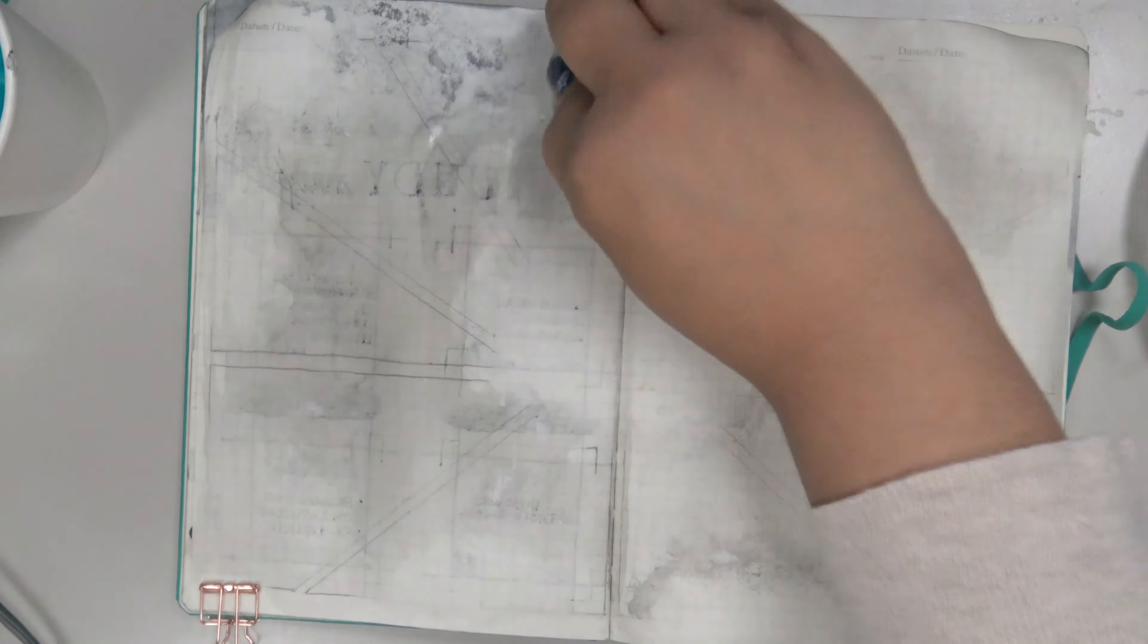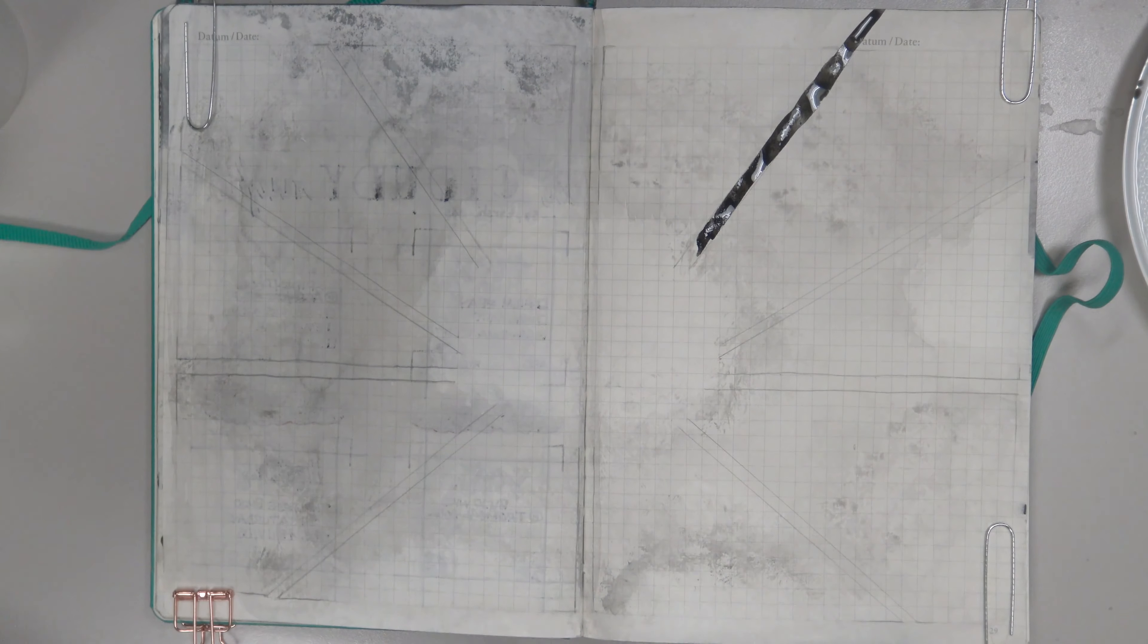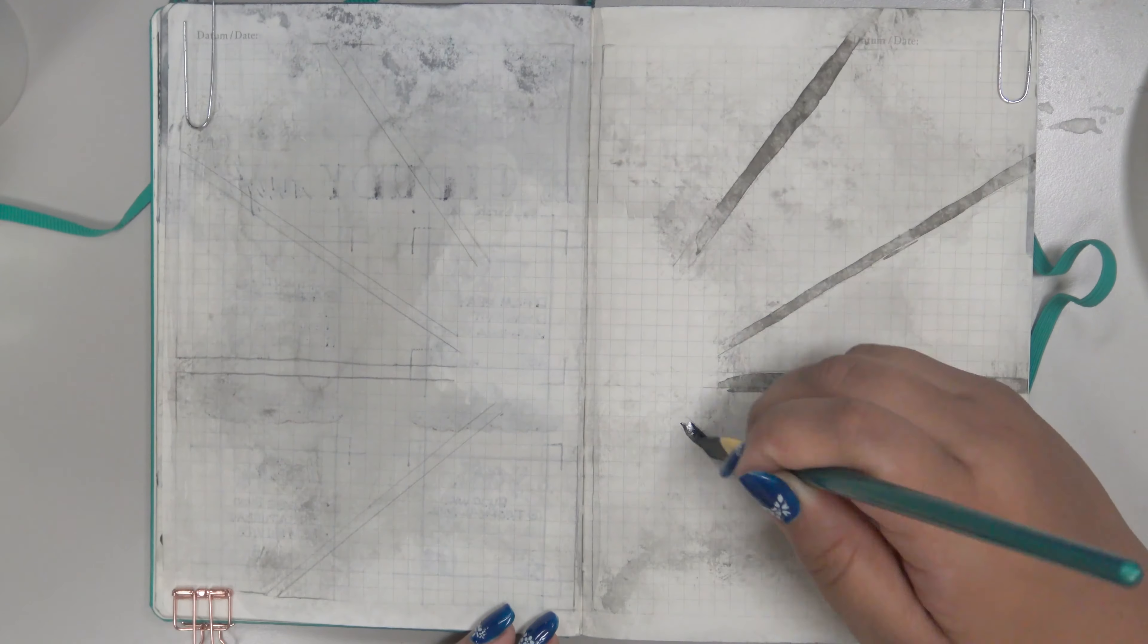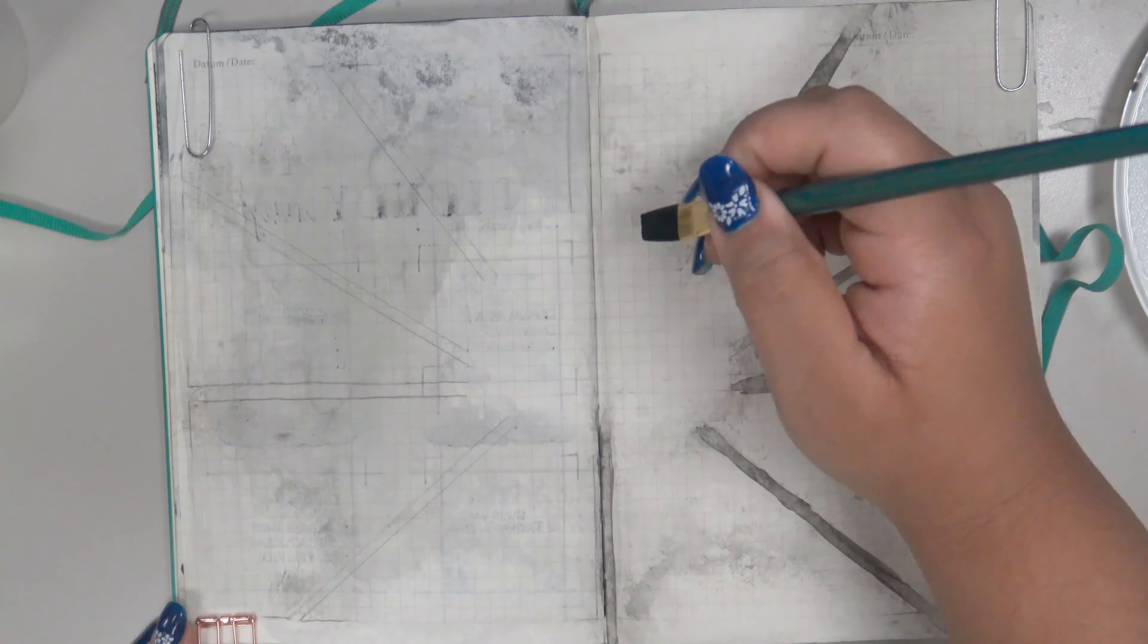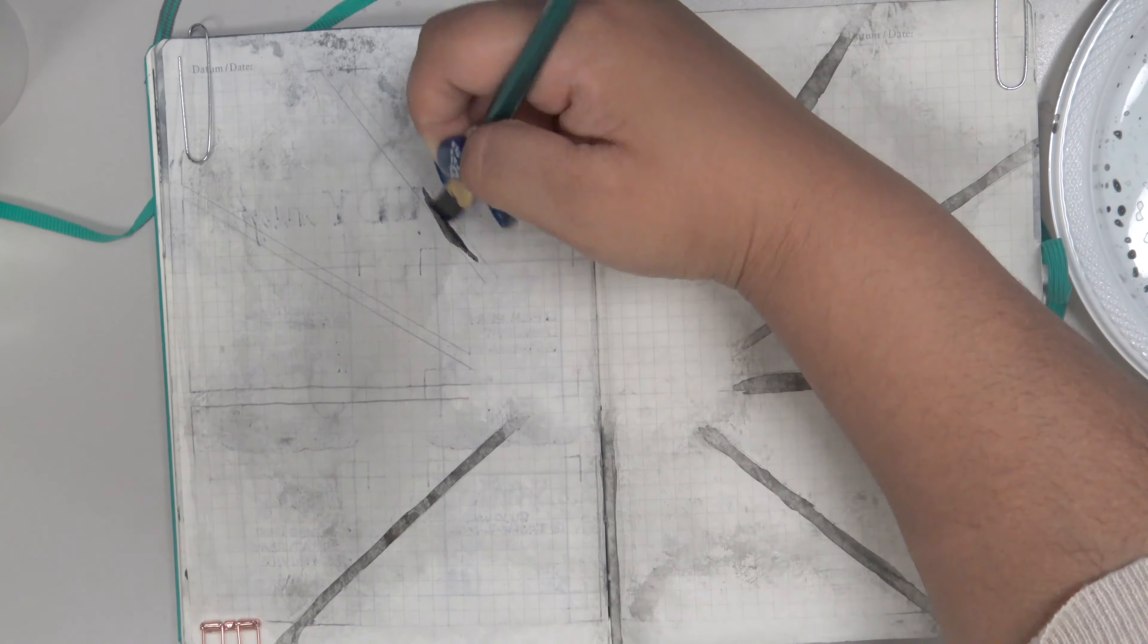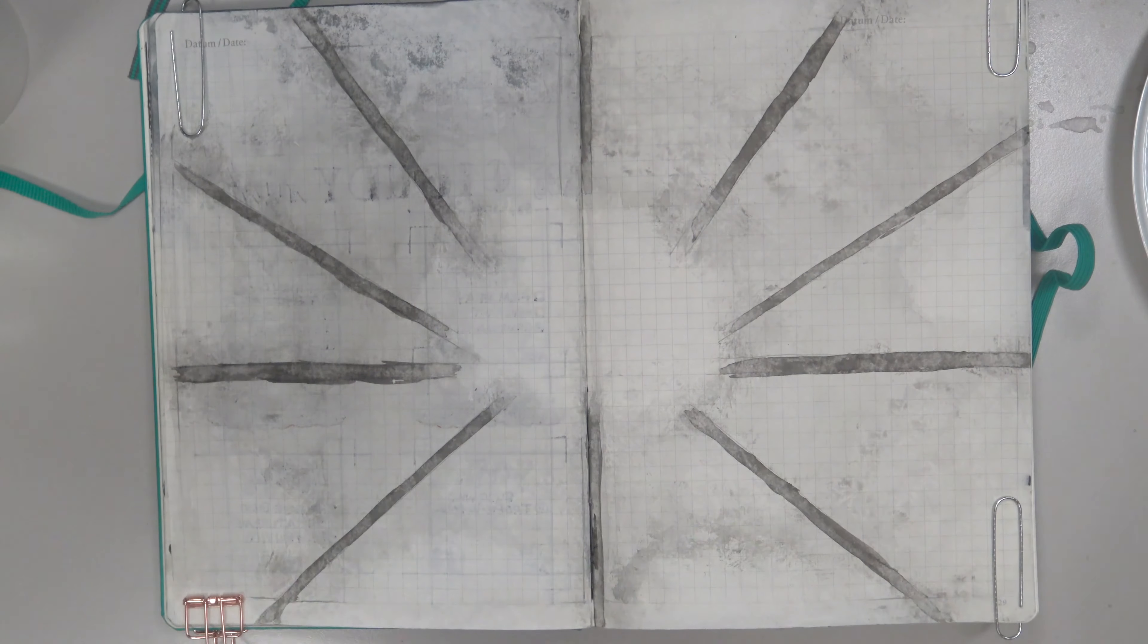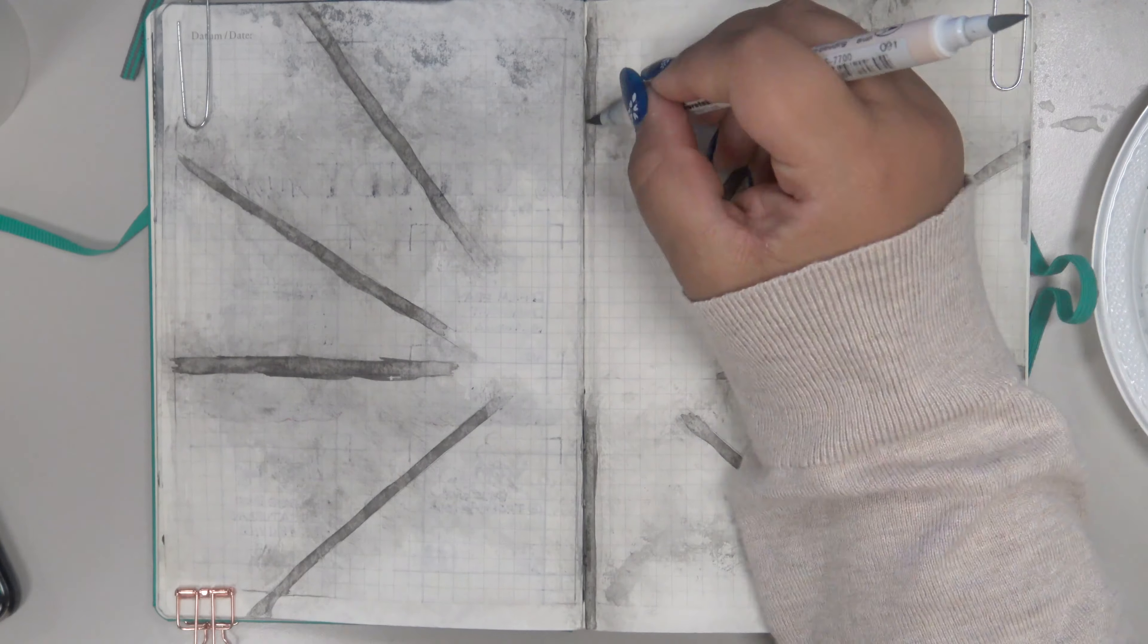I also went in between each section with the less watery, more pigmented version of the ivory black watercolor and a smaller brush. I blotched that with paper towel as well with a lighter hand. Coming back to the dividing lines, I darkened them a little more.